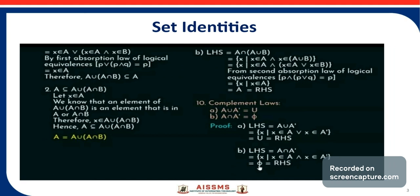Now we prove the second absorption law. Consider the left-hand side: A intersection (A union B). By definition, this is the set of all X such that X belongs to A and X belongs to A union B. We can write X belongs to A union B as X belongs to A or X belongs to B. Using the logical equivalence P and (P or Q) equals P, we get X belongs to A. So A intersection (A union B) equals A.